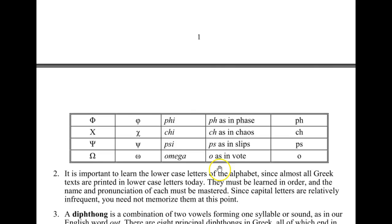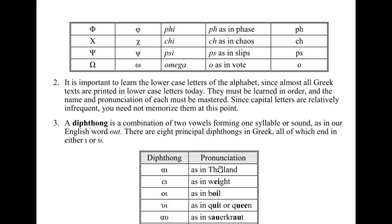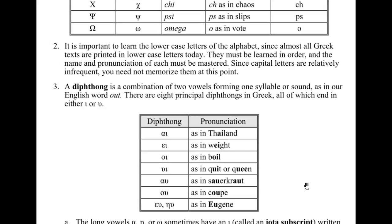It's important to learn the lowercase letters of the alphabet since almost all Greek texts are printed in lowercase today. They must be learned in order, and the name and pronunciation of each needs to be mastered. Since capital letters are relatively infrequent, you don't need to memorize them at this point. In addition to the vowels that show up in the alphabet, Greek combines vowels to form one syllable or one sound — this combination is called a diphthong.